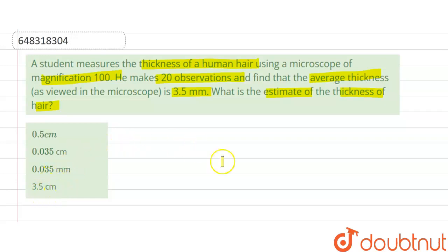So we are given magnification is equal to 100, and average thickness is equal to 3.5 millimeter. So original thickness will be...